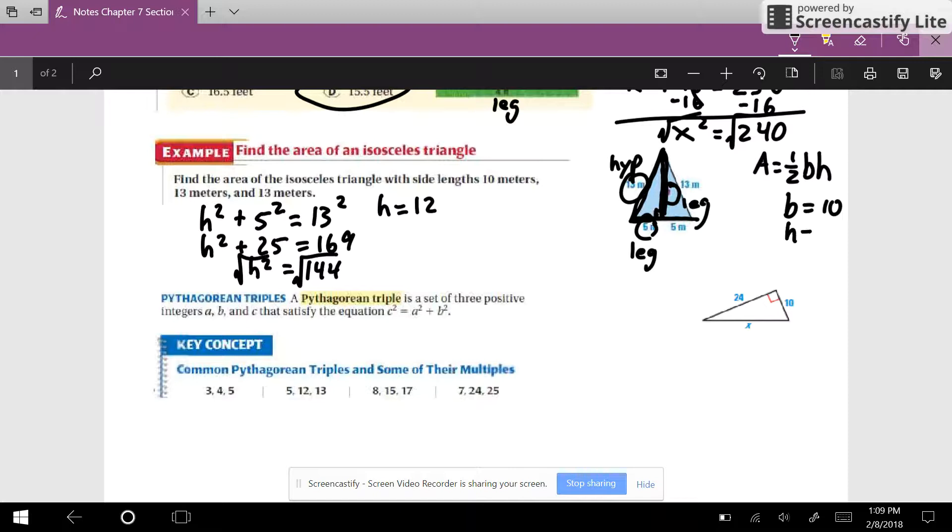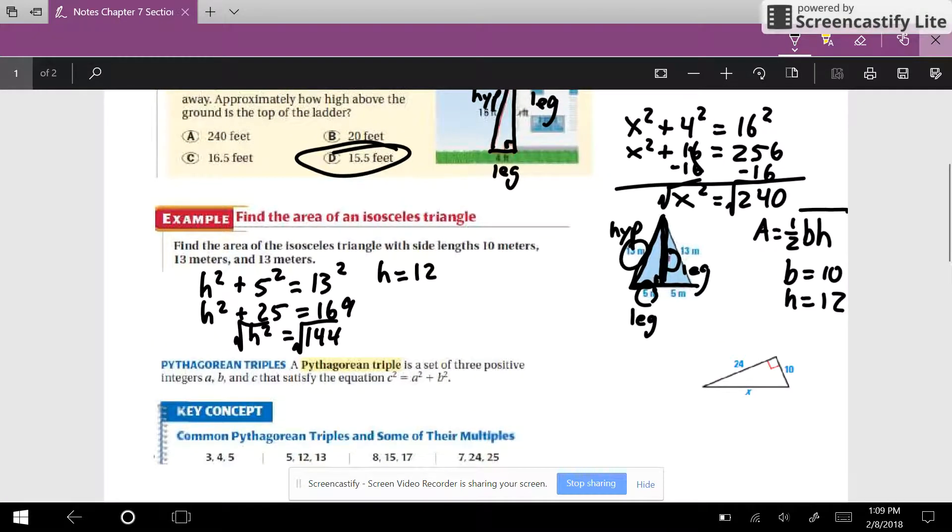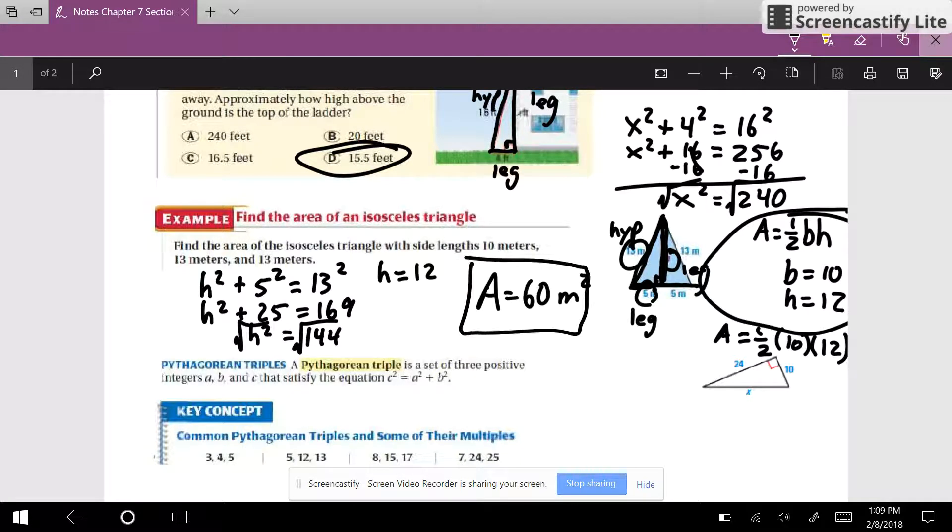So now I can take that over here. Think about now my area. I'm going to do 1 half times 10 times 12. And when you actually multiply that out, you can change the order. I would do 10 times 12 is 120, and half of 120 is 60. We're dealing with meters, and area is always squared, the unit is squared. So 60 square meters is the area.